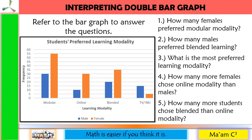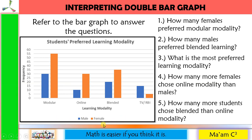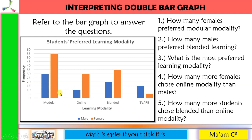Suppose we were able to get the number of females and males in our example. Here is the double bar graph. This is the legend I was talking about earlier. When you create a double or multi-bar graph, choose different colors and make sure the legend corresponds to the color of the bars accordingly.